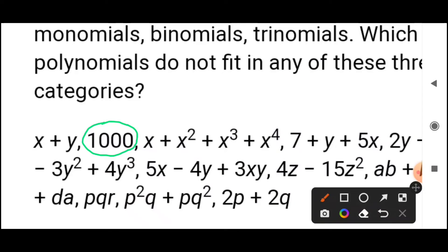The next part, look at this carefully from here to here. If we count the terms: one, two, three, four. Neither is this monomial, nor binomial, nor trinomial.